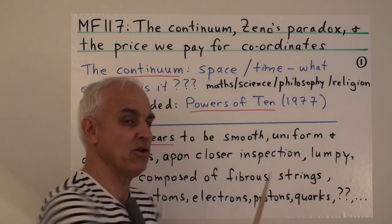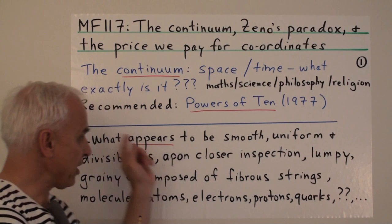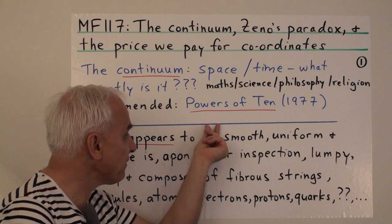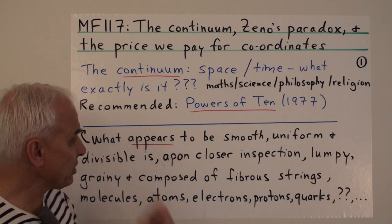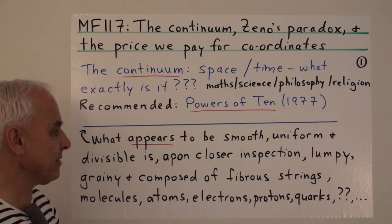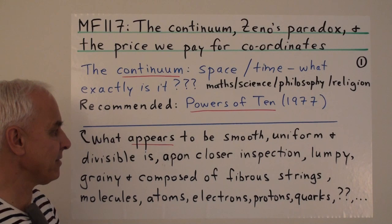So here's an example of a continuum. We get a ruler, we move our pen along the ruler, we create this nice line which appears to be very smooth, uniform, and divisible. There's not anything particularly different about a small section of it than a larger section, it appears. But upon closer inspection, if we actually get a microscope and look at some little part of it, then we see that the uniformity and the smoothness are a little bit illusory. It looks more lumpy, grainy.